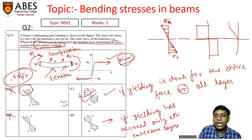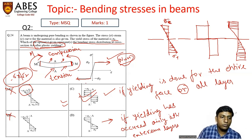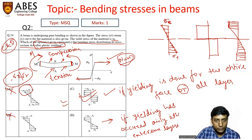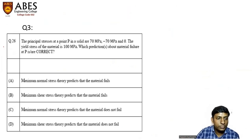Then this is right because up to this point from the neutral layer, this is linearly increasing. And let's say these few layers have reached the yielding point. So such type of diagram is applicable in this situation. So what we can say is both options C and D are correct. I hope you are following the solution.